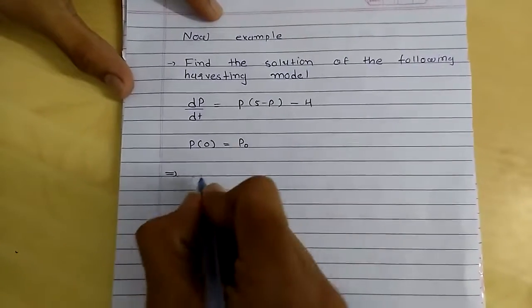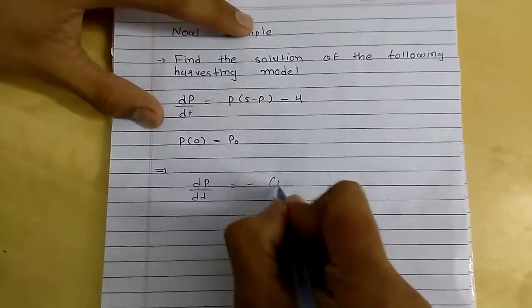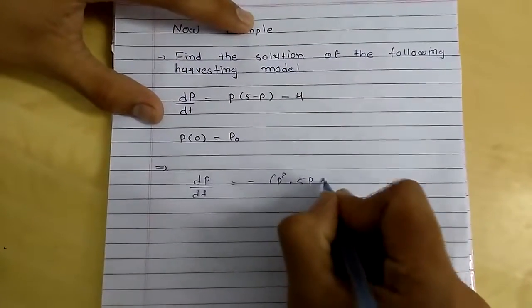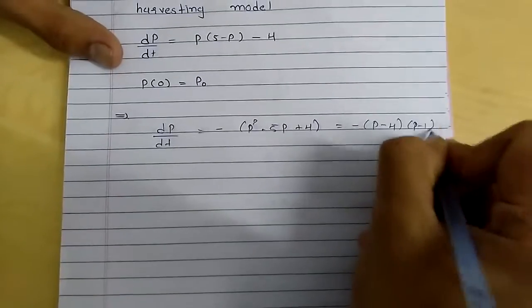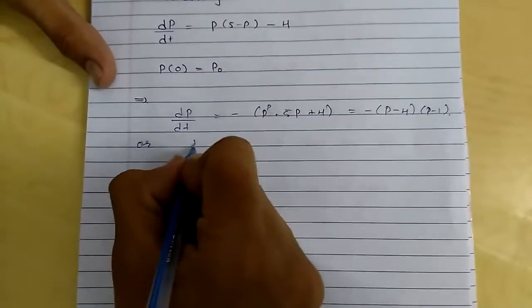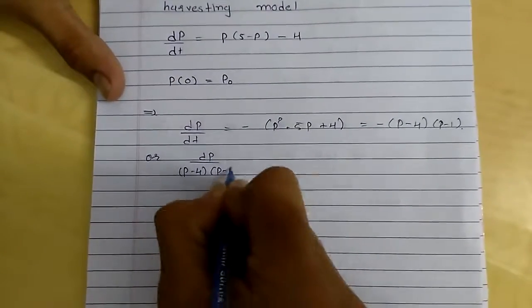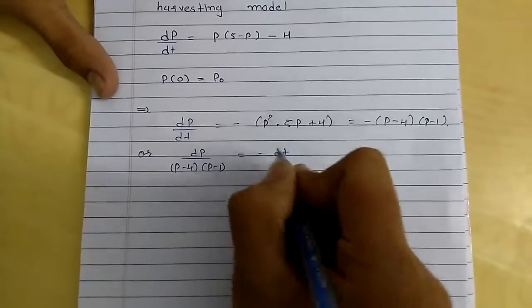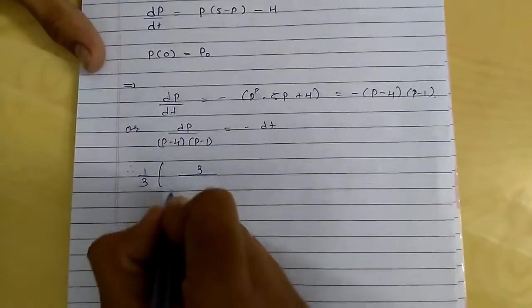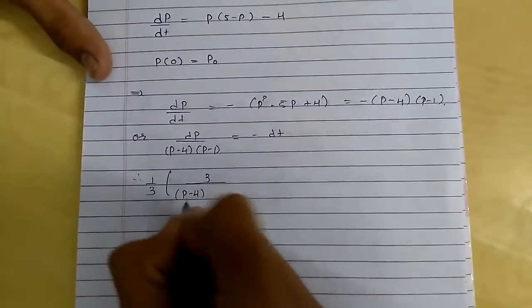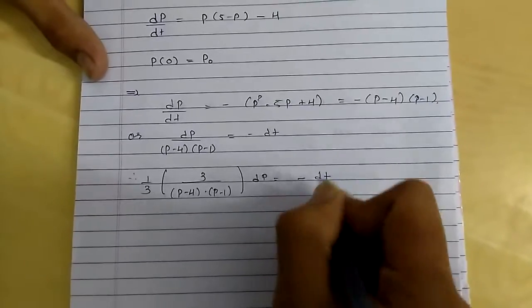So, we can write this differential equation as dp/dt equals minus p squared minus 5p plus 4, which equals minus (p minus 4)(p minus 1). Or we can also write it like p dp/(p minus 4)(p minus 1) equals minus dt. Let's multiply by 1/3 and 3.